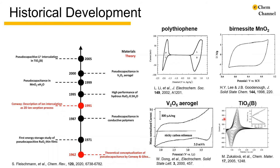Between the 1980s and the 2000s, more materials that possess pseudocapacitive storage of ions were discovered, including conductive polymers, birnessite manganese oxide, iridium oxide aerogels, and bronze ruthenium oxide. Pseudocapacitive materials for energy storage remains a vibrant field. For more recent developments, please refer to our upcoming video on December 6 or the Chemical Review article cited here.